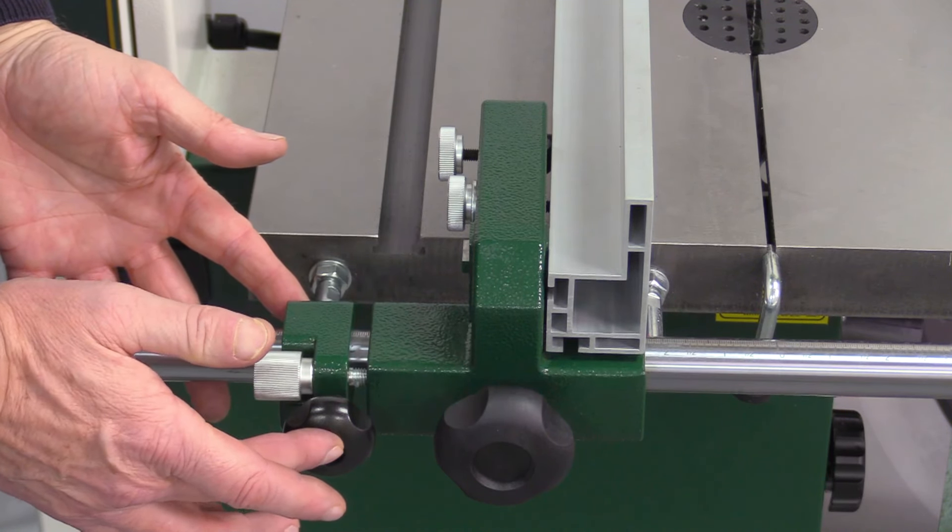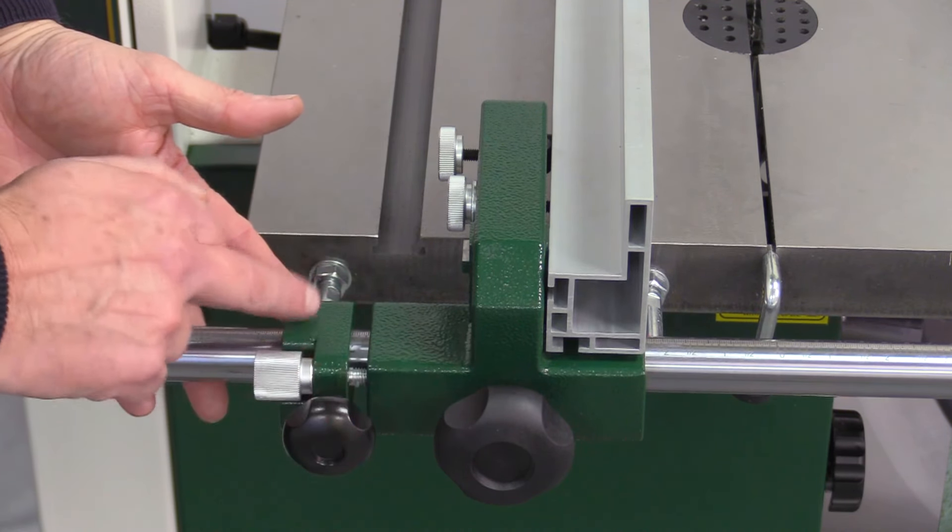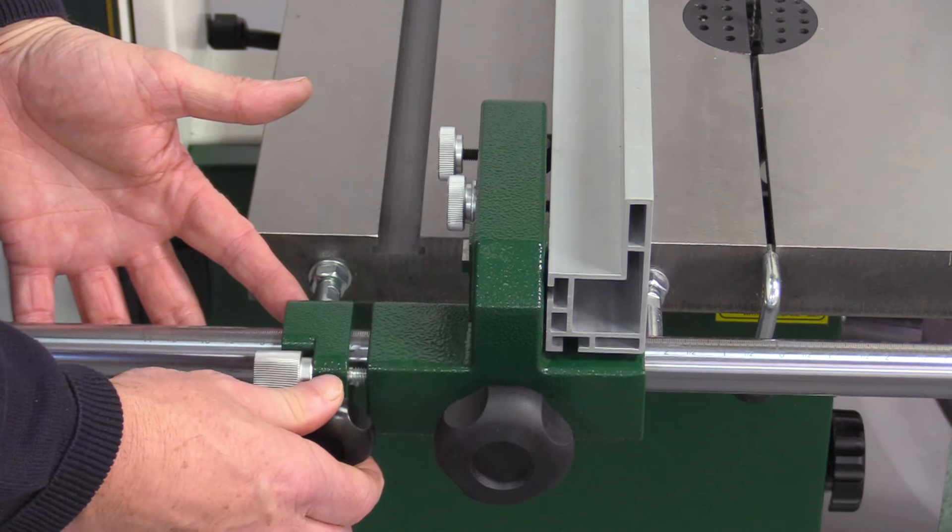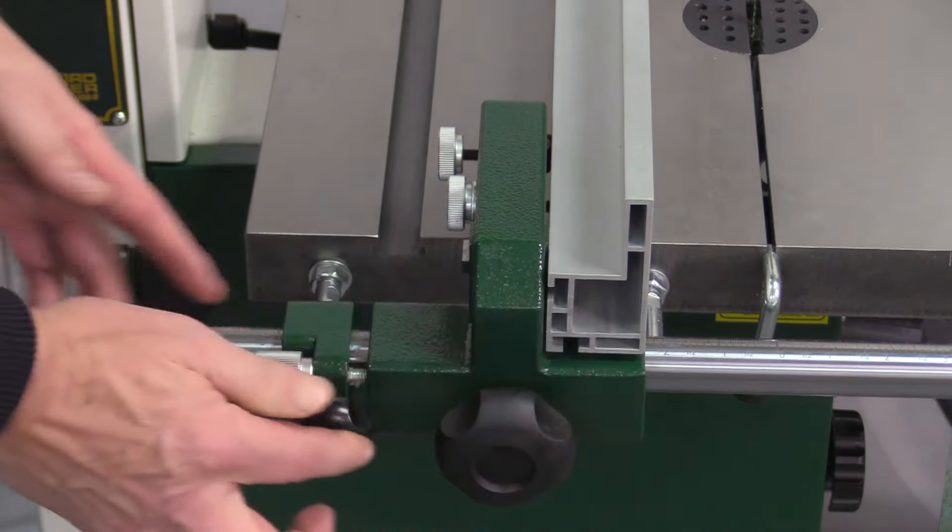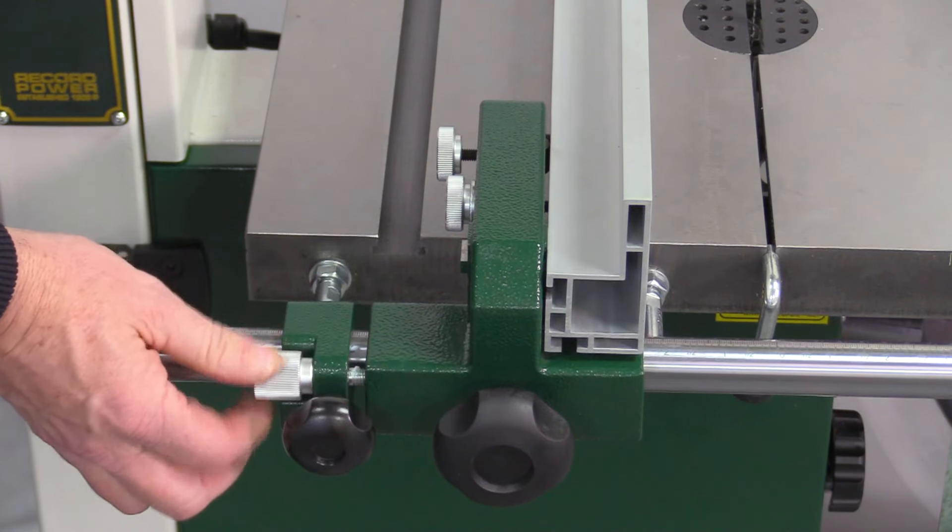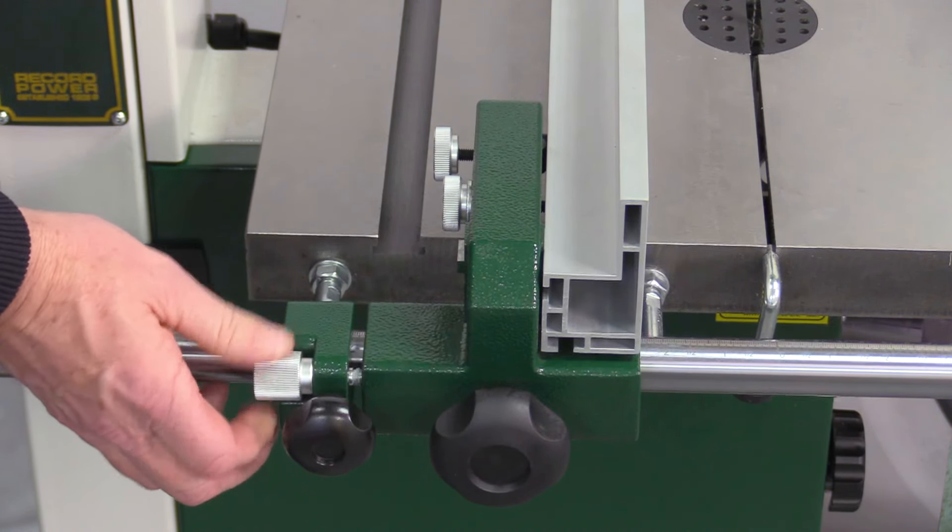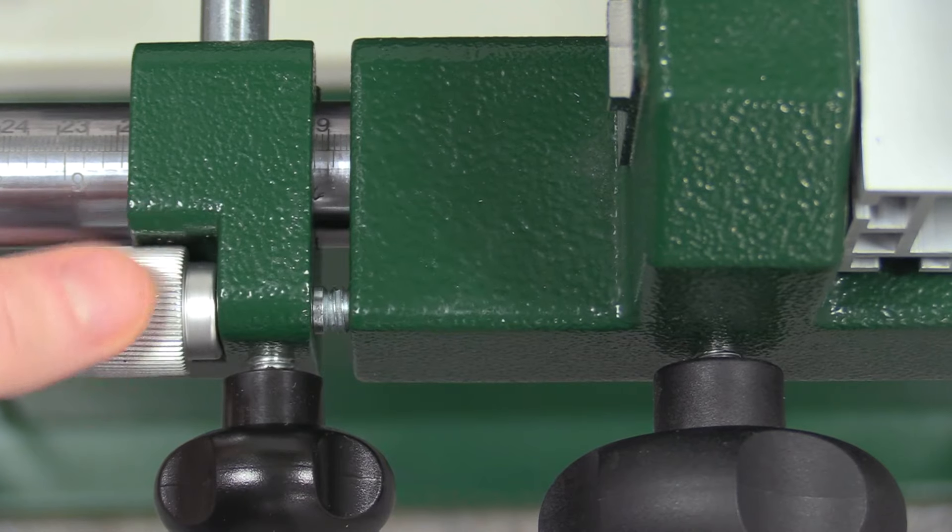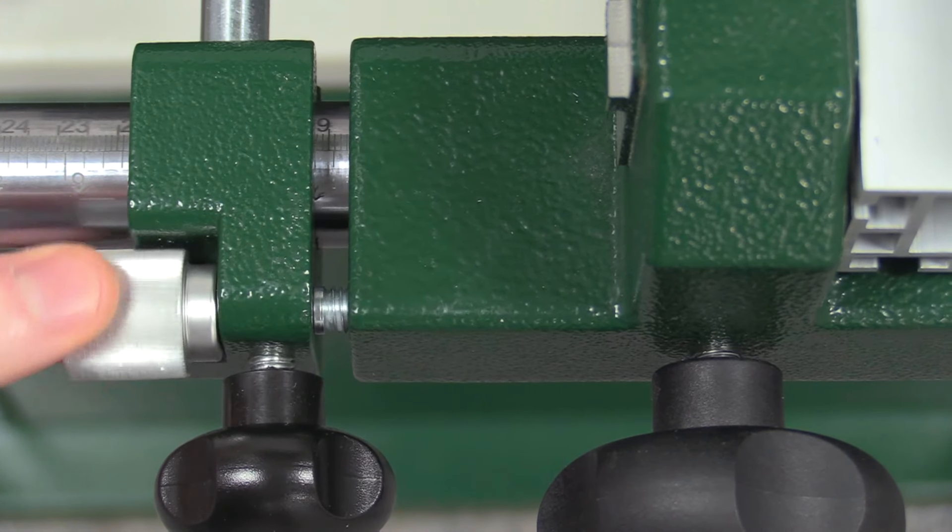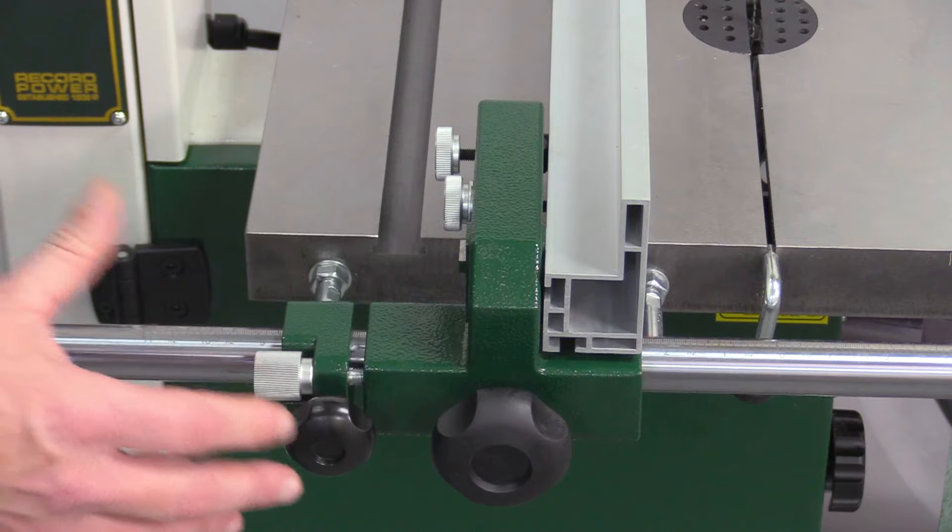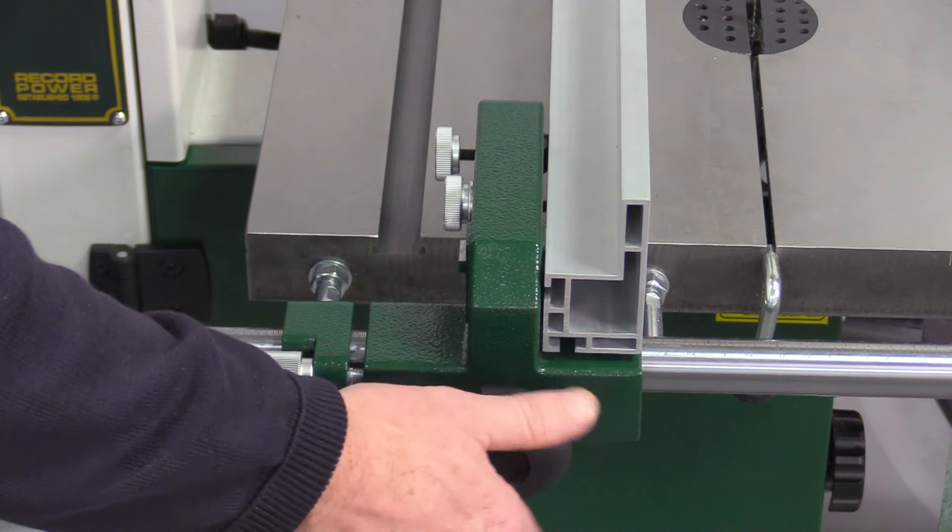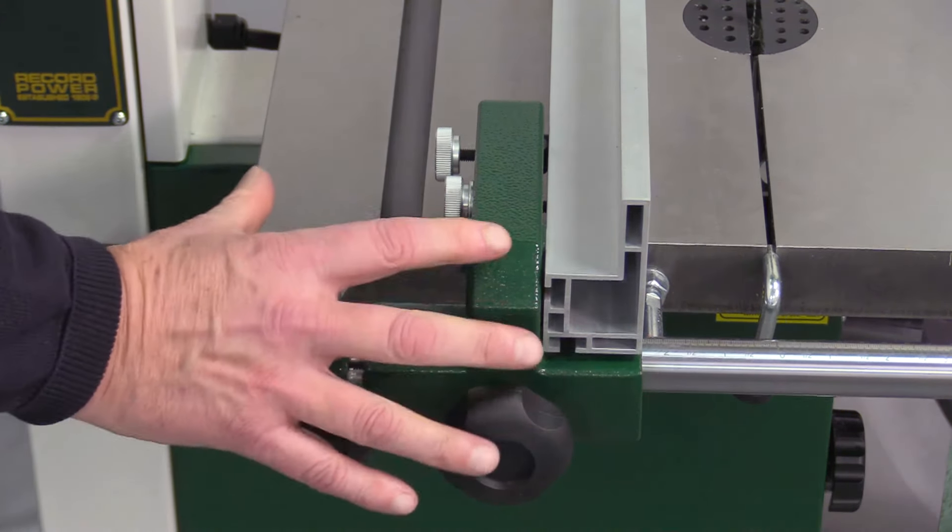What you need to do on this one is actually lock off the micro adjustment itself and loosen off the main fence. Once that's done, you just rotate either towards you or away from you, keeping an eye on the scale for the desired position. Once we've done that, we can lock off the fence to make it nice and secure.